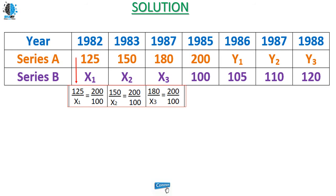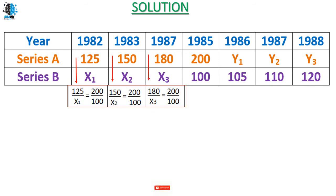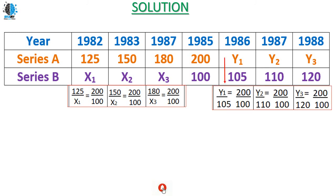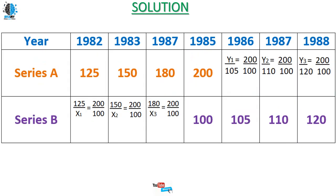For X1: 125 / X1 = 200 / 100. Why 200 / 100? Because series A ends at 1985 and series B starts from 1985, making 1985 the intersection point, where the value is 200 (series A) and 100 (series B). So: 125 / X1 = 200 / 100; 150 / X2 = 200 / 100; 180 / X3 = 200 / 100. Similarly, Y1 / 105 = Y2 / 110 = Y3 / 120, all set equal to 200 / 100, since 200 / 100 is the intersection ratio.